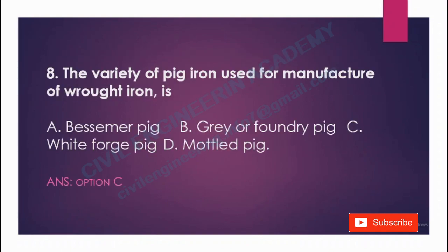The variety of pig iron used for manufacture of wrought iron is: A) bessemer pig, B) gray or foundry pig, C) white or forge pig, D) mottled pig. The answer is option C, white or forge pig.